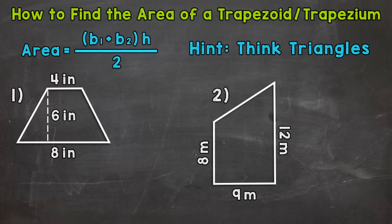Now remember, a trapezoid is a quadrilateral with one pair of parallel sides. And the formula we use to find the area is the length of base one plus the length of base two times the height divided by two. Hint, think triangles. I'll show you exactly what I mean by that as we go through our examples.